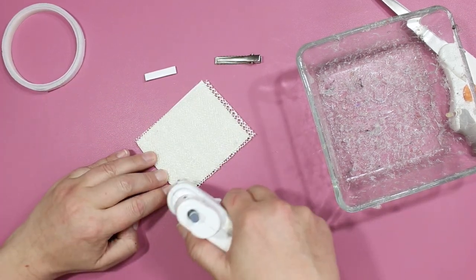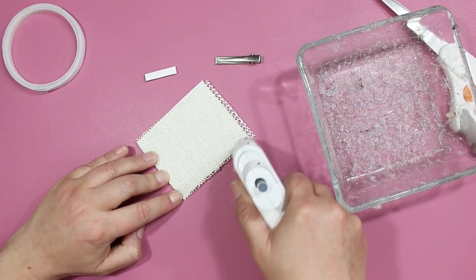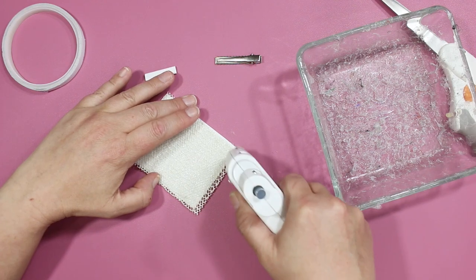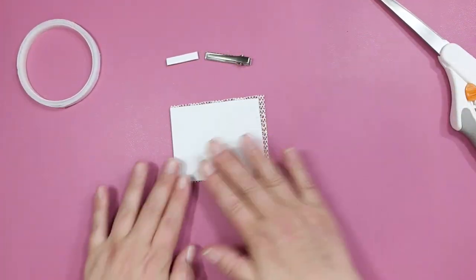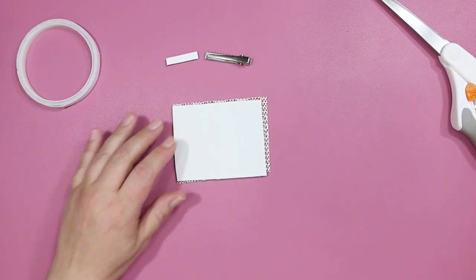After you've got the whole thing on, you're going to go over it again just to make sure that it's all tacked down really good, and especially around the edges so that there's nothing that's going to come loose or come up at all. Then you're going to turn it over and make sure that there is nothing on it.